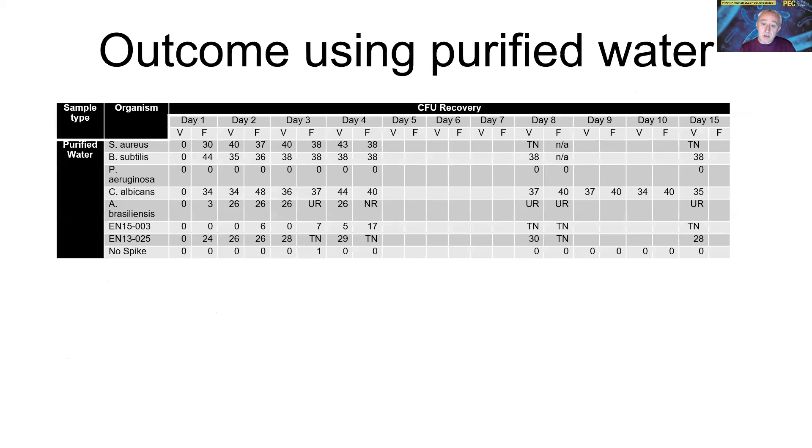In terms of the data we saw, here we've got a data set with various organisms. The EM references are some isolates from the manufacturing facility that we used. V is the viable conventional method, F is the fluorescence method. You can see already by day one or day two, we're getting good detection of these stressed organisms. We're getting detection earlier and better than we are with the conventional method.